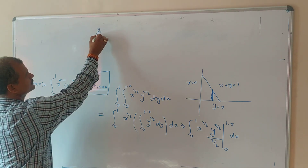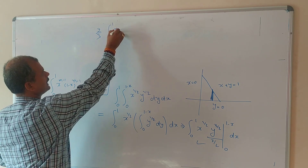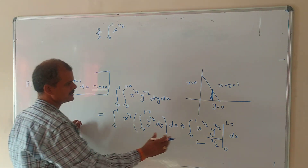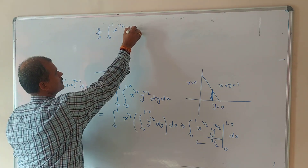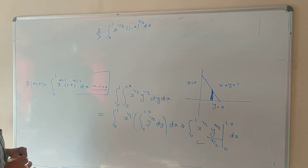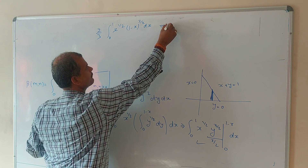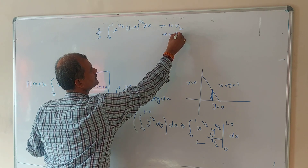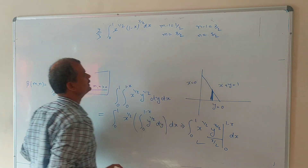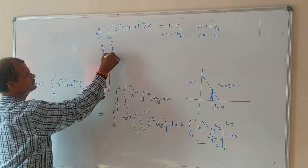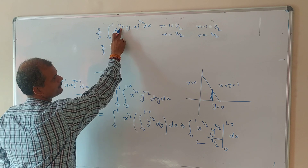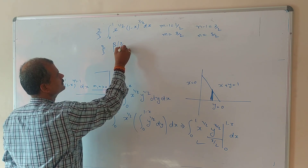So we get (2/3) times the integral from 0 to 1 of x^(1/2) times (1−x)^(3/2) dx. This is the beta function form. Here m−1 equal to 1/2, so m equal to 3/2; and n−1 equal to 3/2, so n equal to 5/2. So the integral becomes (2/3) times Beta(3/2, 5/2).